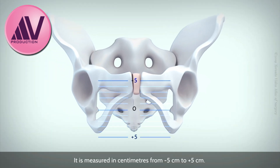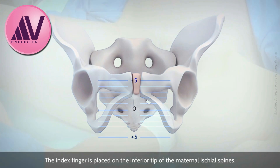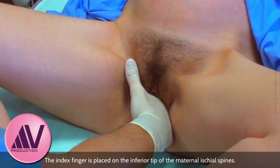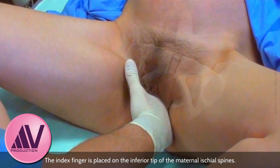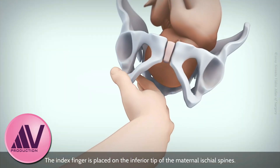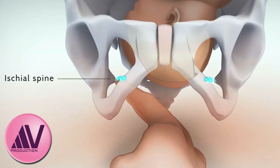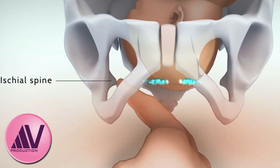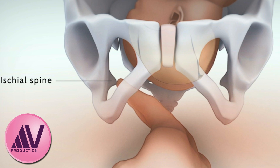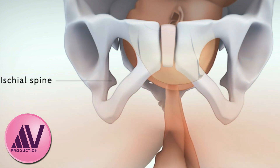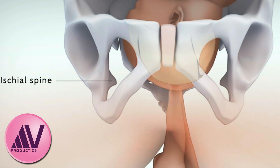Following a deep per vaginal examination, the index finger is placed on the interior tip of the maternal ischial spines. The midpoint between each spine is estimated. The index finger then moves towards the midline and a reference mark is placed on the hand at the introitus. This reference mark defines zero station.